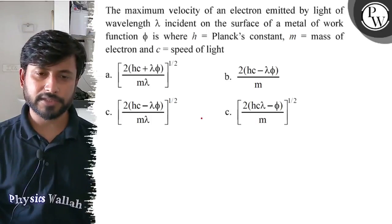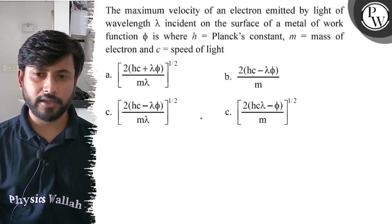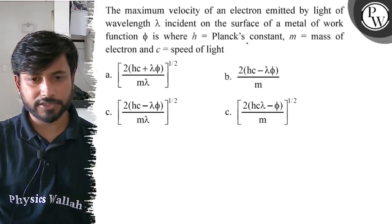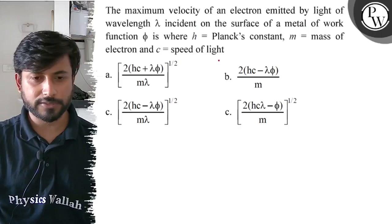Hello, let us see this question. The maximum velocity of an electron emitted by light of wavelength λ incident on the surface of a metal of work function φ, where h is Planck's constant, m is mass of electron, and c is speed of light.